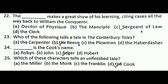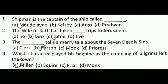Next question: Dash is the cook's name. The correct answer is C, that is Roger. Next question: Which of these characters tells an unfinished tale? The correct answer is D, that is the Cook. Next question: The Shipman is the captain of a ship called — the correct answer is A, that is Madelaine.